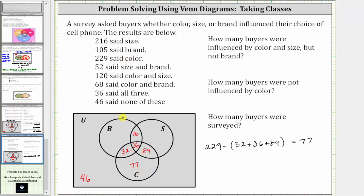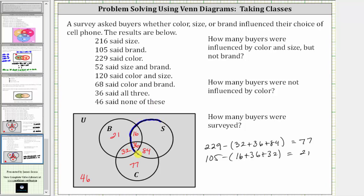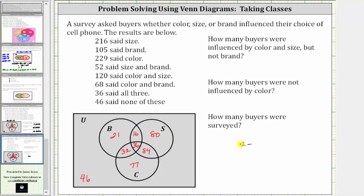Next, 105 said brand, so there are 105 buyers in set B. We already have 16 plus 36 plus 32 buyers in this set. To find buyers only in set B, we take 105 and subtract the sum of 16, 36, and 32, which equals 21. Finally, we're told 216 said size, so there are 216 buyers in set S, with 16 plus 36 plus 84 already placed, leaving 80 buyers influenced only by size. The Venn diagram is now complete.